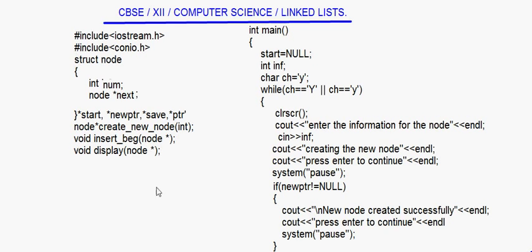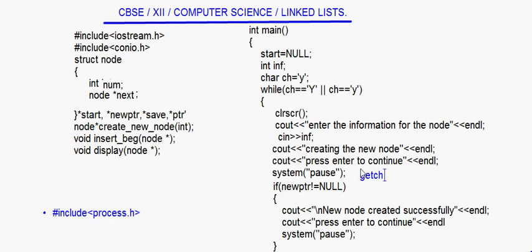For system pause, one more header file has to be included which is #include process.h. If you are using this system pause, then #include process.h has to be included. And if you are using only conio.h, then instead of system pause you can just put getch.